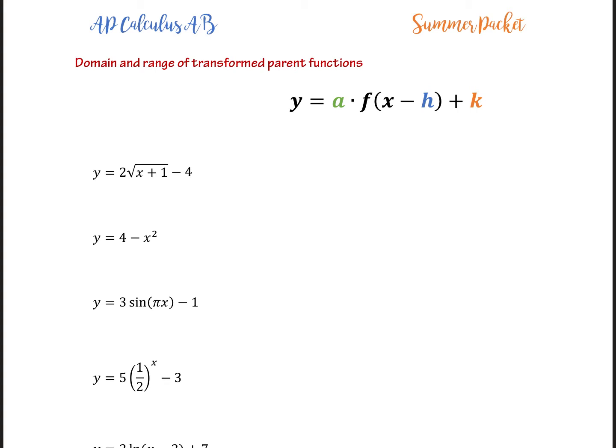What this does is now what if we have certain transformations performed on those parent functions, how does that change the domain and range? So just to be clear, if you have a coefficient in front of the x for whatever the function is, that is often a stretch, a compression, or a reflection, which may change the range. This h is a horizontal shift or horizontal translation either left or right. That can also for some functions affect the domain. And then finally the plus k. If you have your function and at the very end you see an adding or subtracting of a constant, that is a vertical shift or vertical translation up or down. And that too can affect the range.